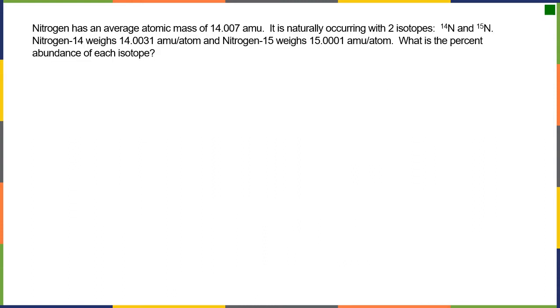All right, let's do another one with a bit more math. So nitrogen has an average atomic mass of 14.007 AMU. So we know that 14.007 AMUs for an average nitrogen. This is naturally occurring with two isotopes. So that is going to equal the fraction of the first one. So let's call it nitrogen-14.